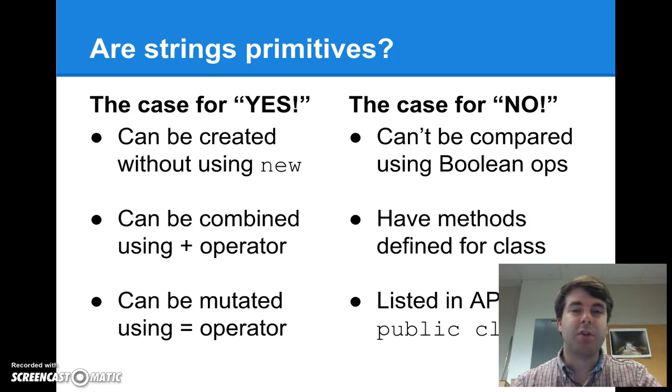You can combine them using an operator, the plus sign, which we're going to learn about in a little bit. And you can change them by using the assignment operator, just like we mentioned in the previous slide. So all of those things make them seem very much like an int or a double or a char, the primitive types that we've studied.